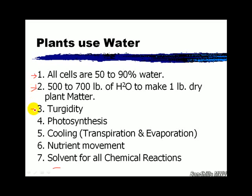Water is very important to the plant for turgidity. When water is low, the plant will lose its rigidity, leaves will roll, and it will crumple up. Water, H₂O, is a part of the photosynthesis equation. The plant is cooled through transpiration and evaporation, just like humans are through sweating. We can help the plant sometimes by syringing, but we need to be aware that sometimes if we're using hot water, that's not a benefit.